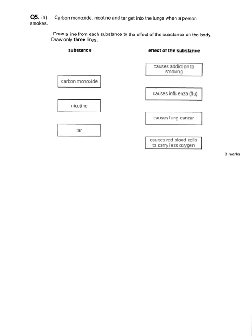This next question is about the lungs and breathing, looking at different chemicals that are contained in cigarettes and the impact that they have on the body. We have to match the substances up to their effect. Carbon monoxide is what causes red blood cells to carry less oxygen. The nicotine is what causes the addiction, and tar can cause lung cancer.